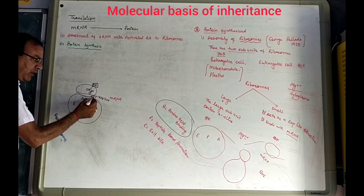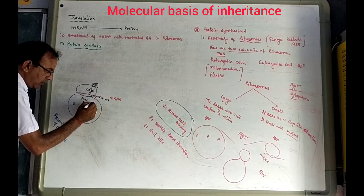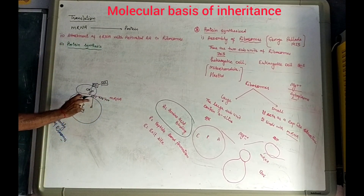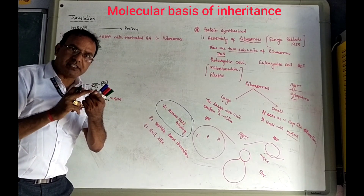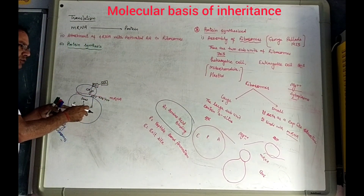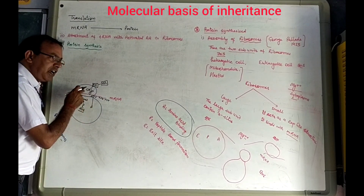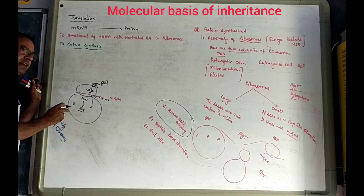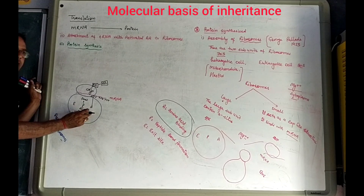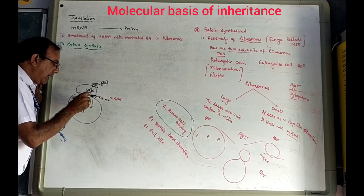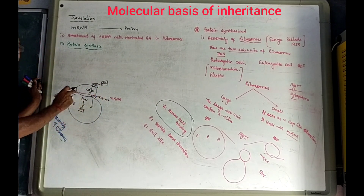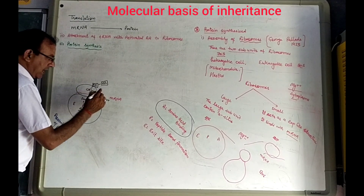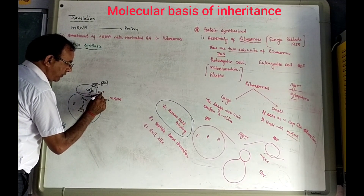First of all, the first amino acid — except AUG — binds at the A site. F-Met, that is the activated methionine which acts as the initiator, always binds at the P site, not the A site. All other amino acids always bind at the A site, except F-Met. Because F-Met performs a dual function — it acts as methionine amino acid and also as the initiator to initiate the process. There are more than 60 types of tRNA which bind the activated amino acid.